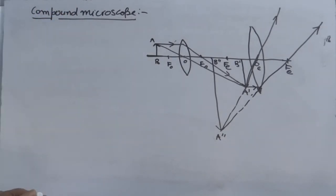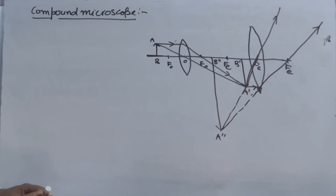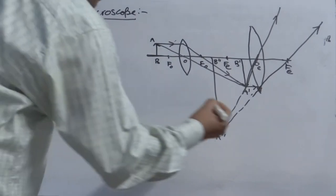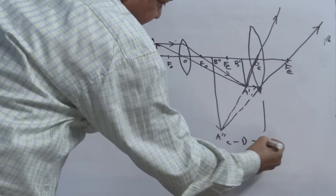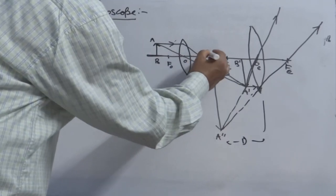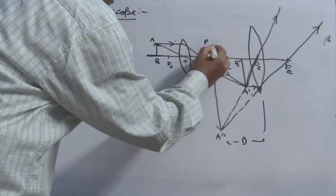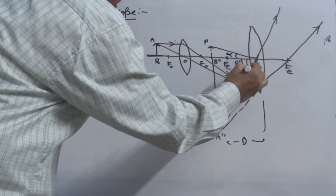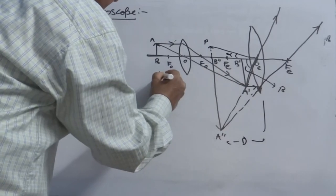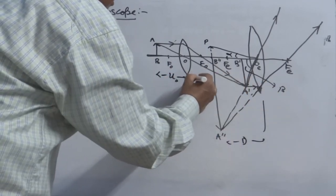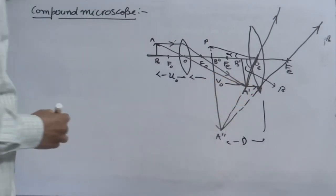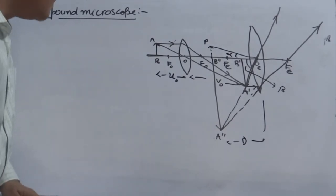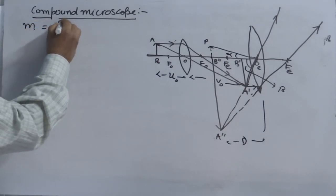The definition of magnifying power for the compound microscope is the same: the ratio of the angle subtended by the final image to the angle subtended by the object, when both are at the least distance of distinct vision. The final image is formed at the least distance of distinct vision D, so we place an equivalent object PB'' here. This angle is alpha and this is angle beta. By definition, M equals beta over alpha, which we write as tan(beta) over tan(alpha).